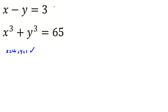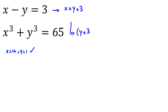But we should analyze and find all answers and prove they are the only answers. From the first equation, if we take negative y to the right-hand side, x will be y plus 3. And if we replace x with y plus 3 in the second equation, we get (y plus 3) cubed plus y cubed equals 65.